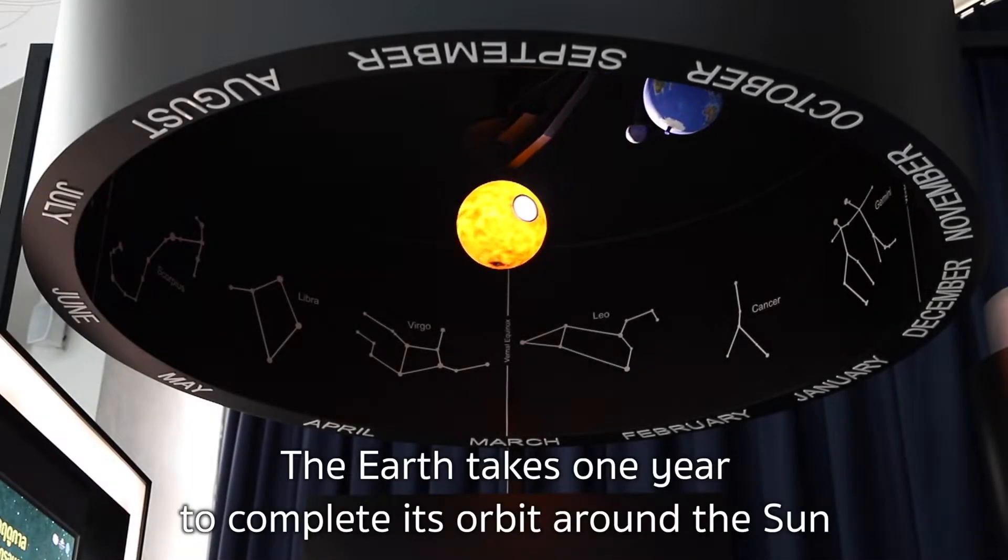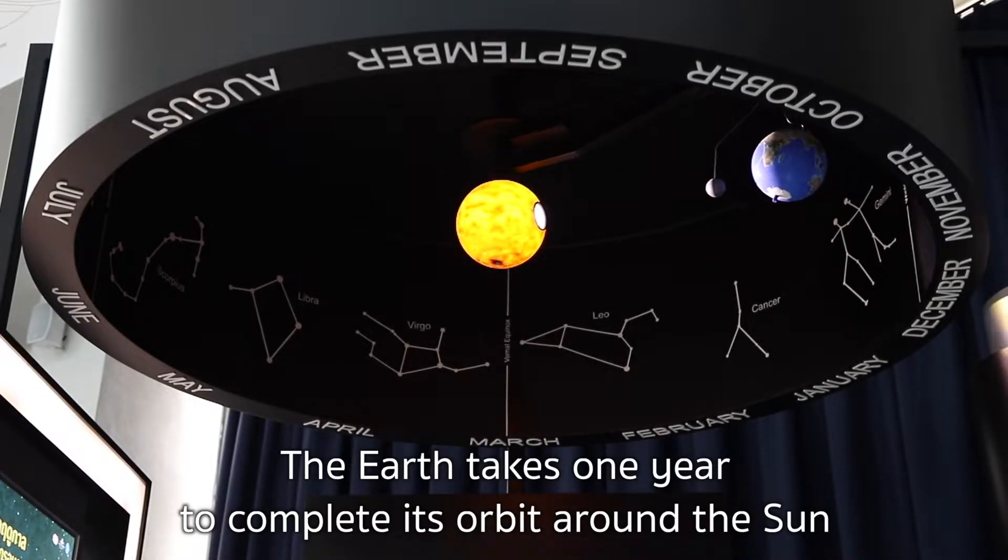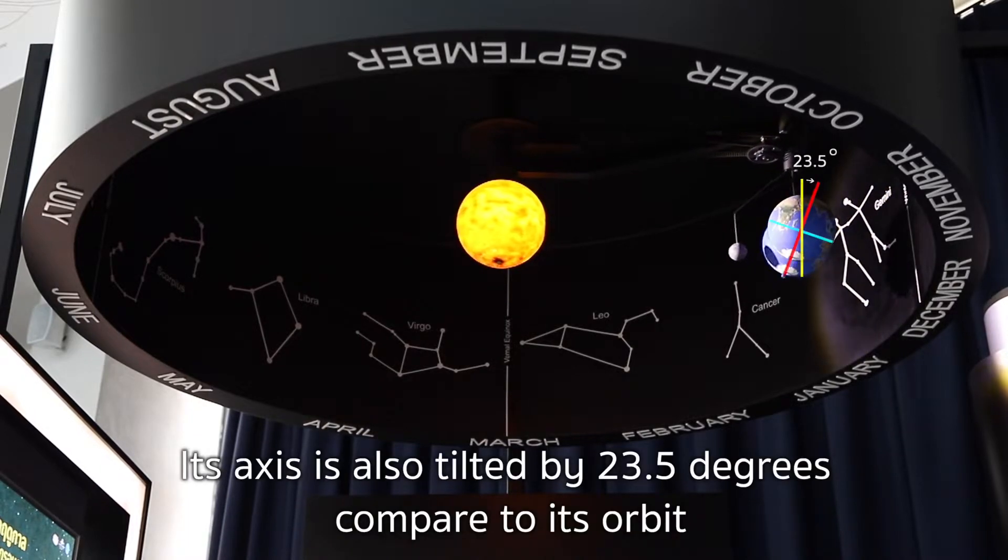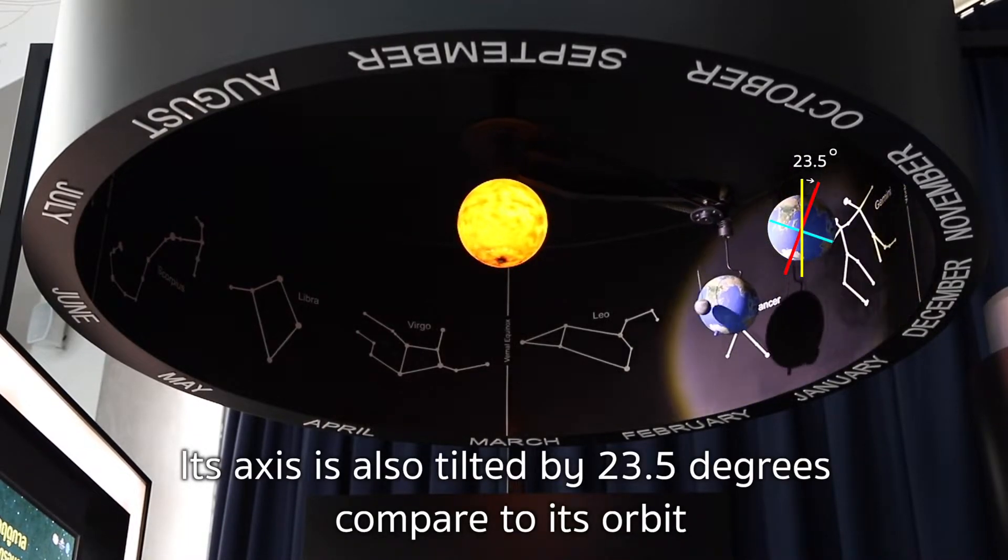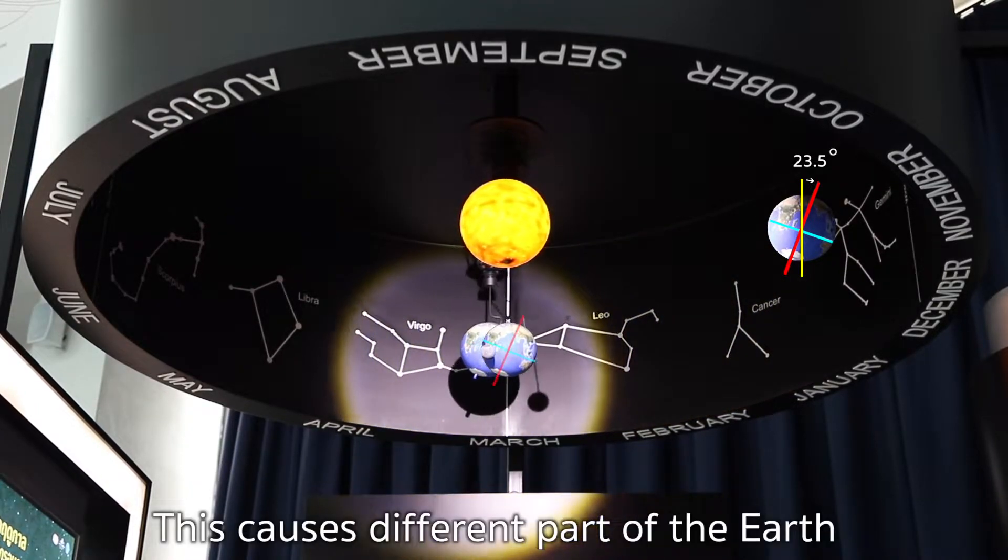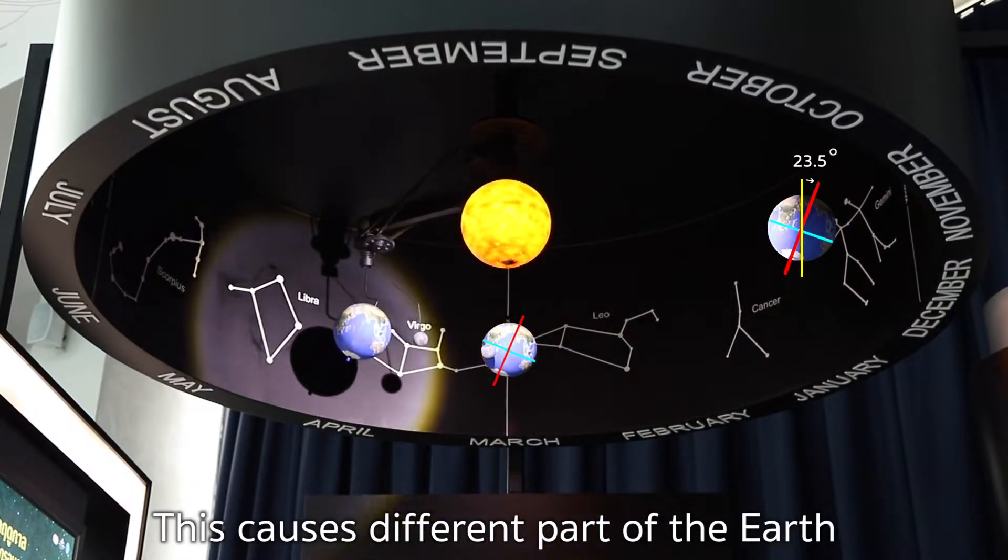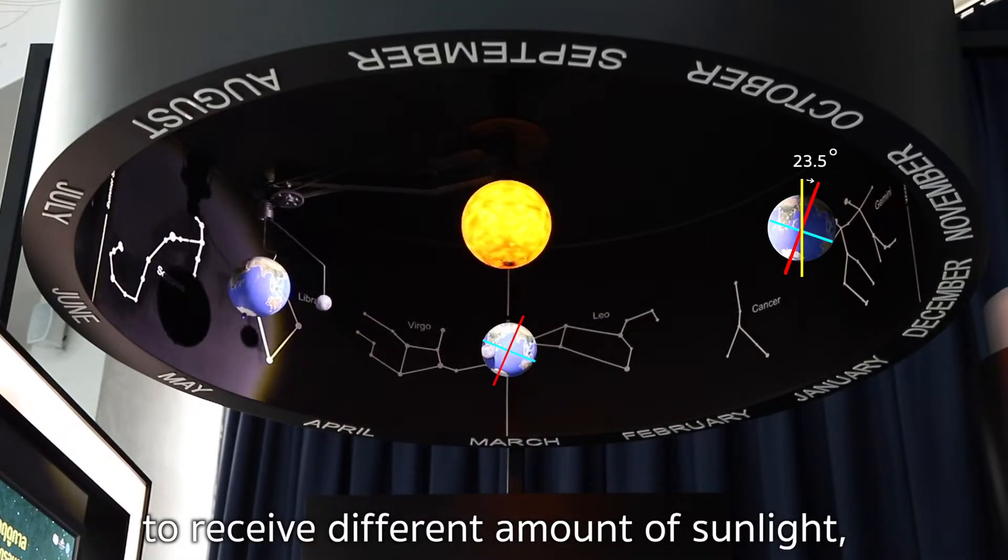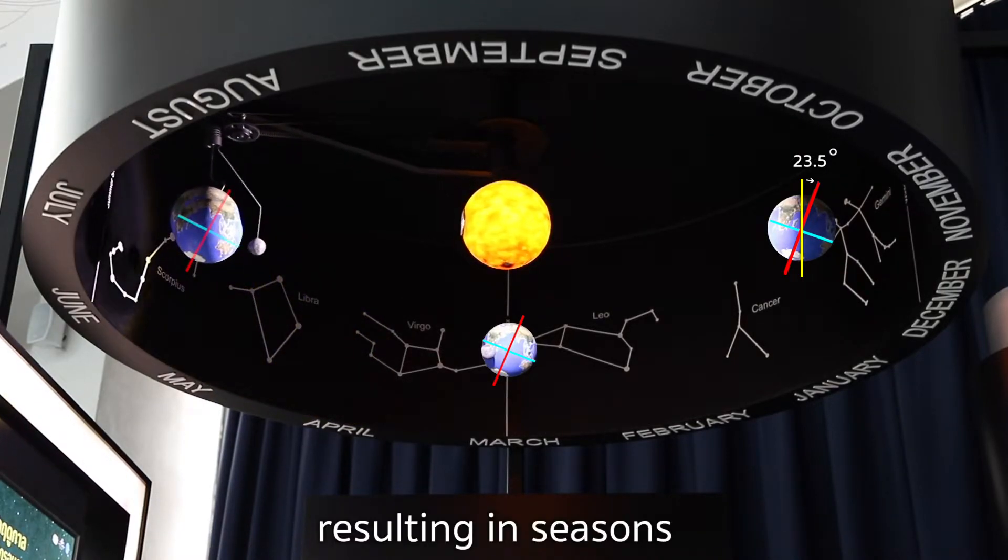Seasons. The Earth takes one year to complete its orbit around the Sun. Its axis is also tilted by 23.5 degrees compared to its orbit. This causes different parts of the Earth to receive different amounts of sunlight, resulting in seasons.